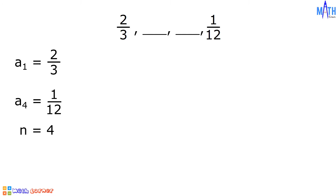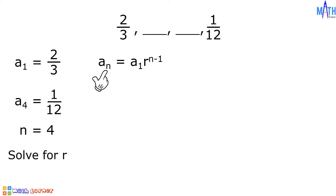The value of n is equal to 4. To solve for the common ratio, we will be using the formula in finding the nth term of a geometric sequence. Since n is equal to 4, a sub n becomes a sub 4, which equals a sub 1 times r raised to n minus 1, which becomes r raised to 4 minus 1, and that is equal to r cubed.